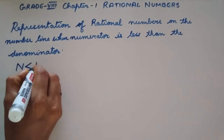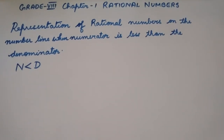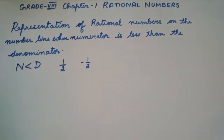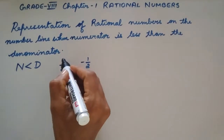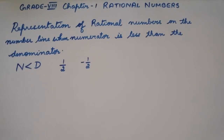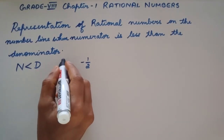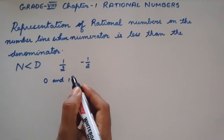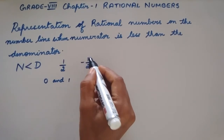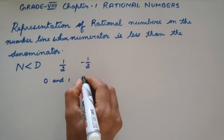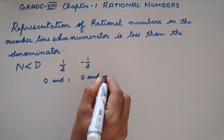Let us represent half and minus half on the number line. Here the numerator is less than the denominator. When the numerator is less than the denominator, the positive rational numbers will always be between 0 and 1, and the negative rational numbers will always be between 0 and minus 1.